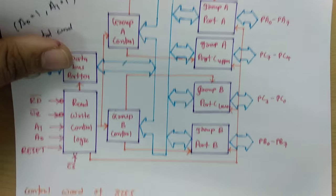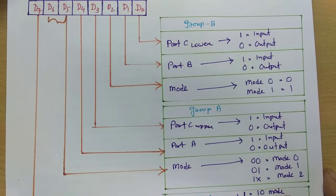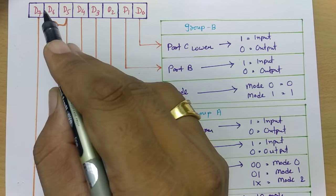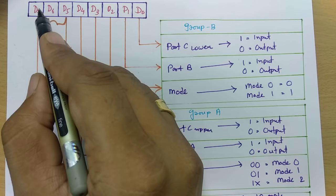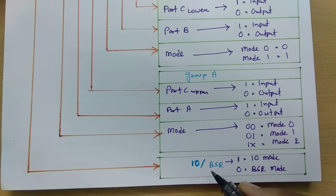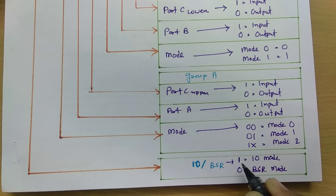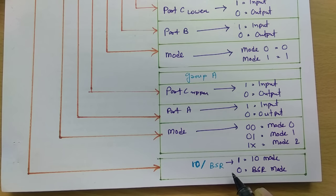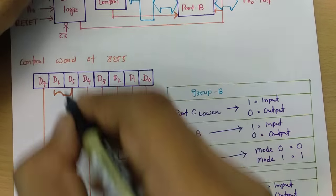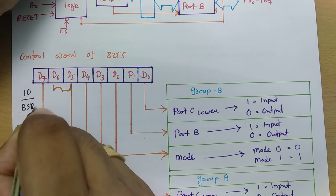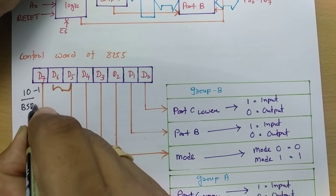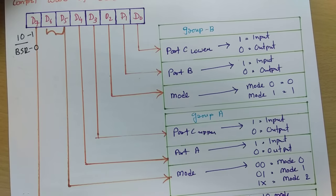In the control word of 8255 we have bits D7 through D0. The D7 bit defines the mode: if it is 1, 8255 functions in input-output mode; if it is 0, 8255 functions in BSR (bit set reset) mode.